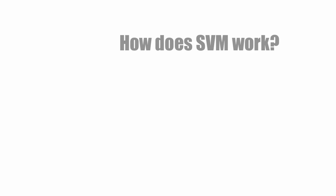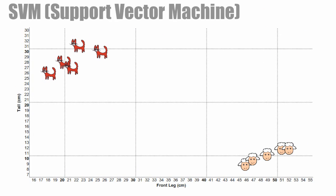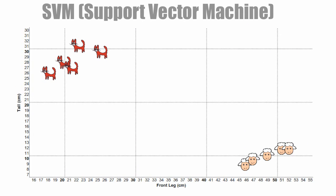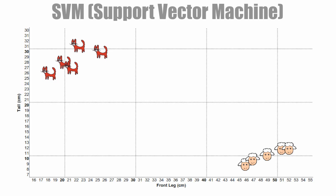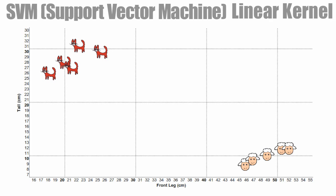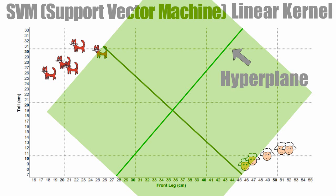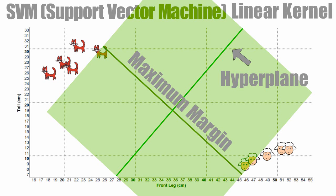How does SVM work? First let's get back to our data. SVM stands for support vector machine. Let's start with a linear kernel. The way it works is by calculating a line which is called the hyperplane. This line has the same distance from both classes and has the maximum margin possible.